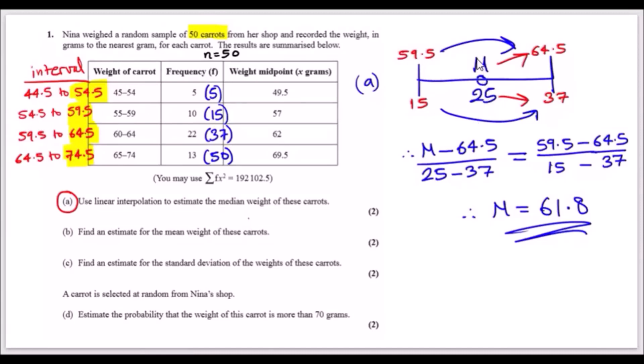I did this nice diagram here. I put the median on the top and 25 on the bottom, indicating this is the median weight and the 25th carrot. I say 25 is located between the 15th carrot and the 37th carrot, and as for the weights, it's located between the 59.5 weight and 64.5 weight. If you put 15 here, make sure you put 59.5 above it. This is how you should demonstrate it.